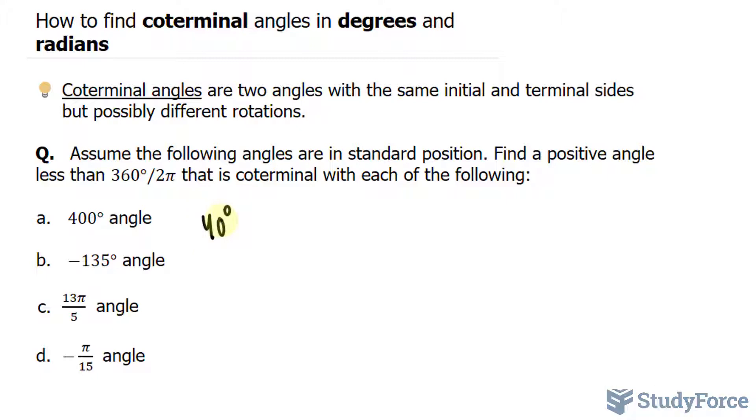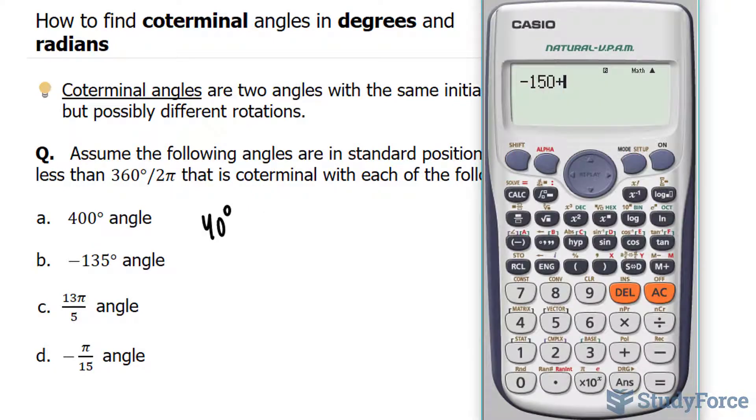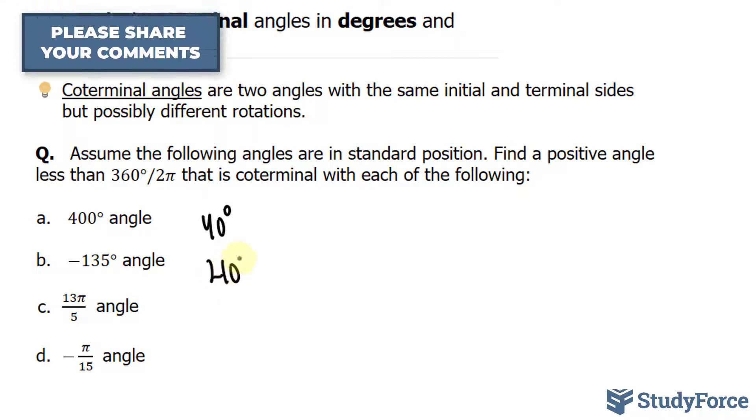Let's try question B. This time they have negative 135 degrees as the angle. Remember, they want it positive and less than 360. Our only option here is to add 360 to this, because if we do, we end up with 210. That's between 0 and 360, and that's exactly what we need. 210 is the answer.